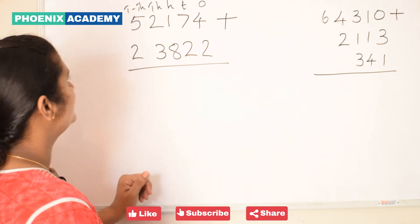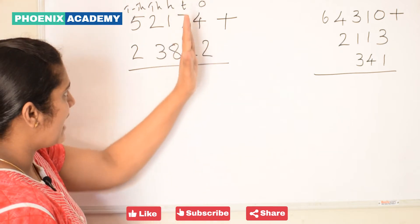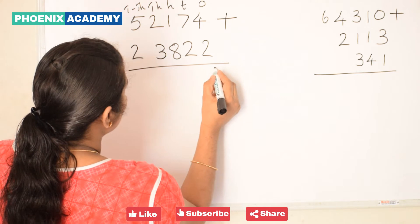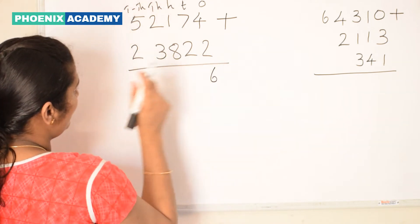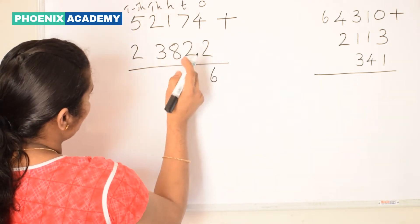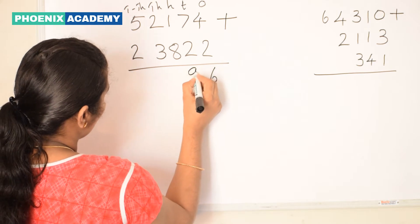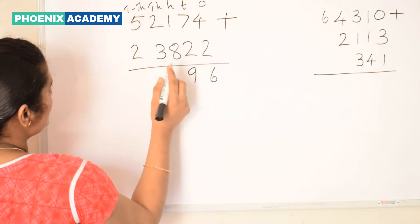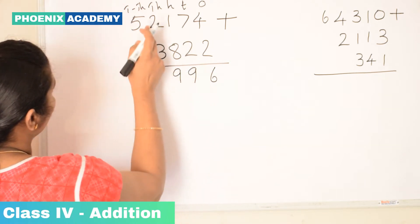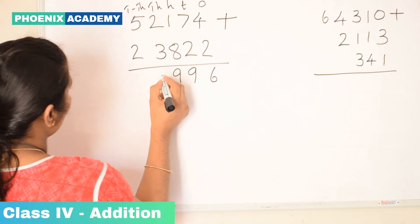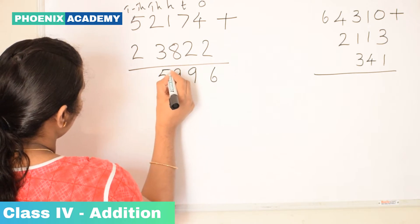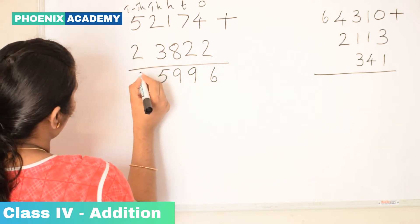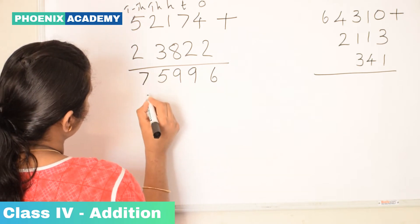Let's add now. First we will add ones: 4 plus 2 is 6, we write 6 in the ones place. Then 7 plus 2 is 9, we write 9 in the tens place. 1 plus 8 is 9. 2 plus 3 is 5, we write 5 in the thousands place. 5 plus 2 is 7, we write 7 in the ten-thousands place.